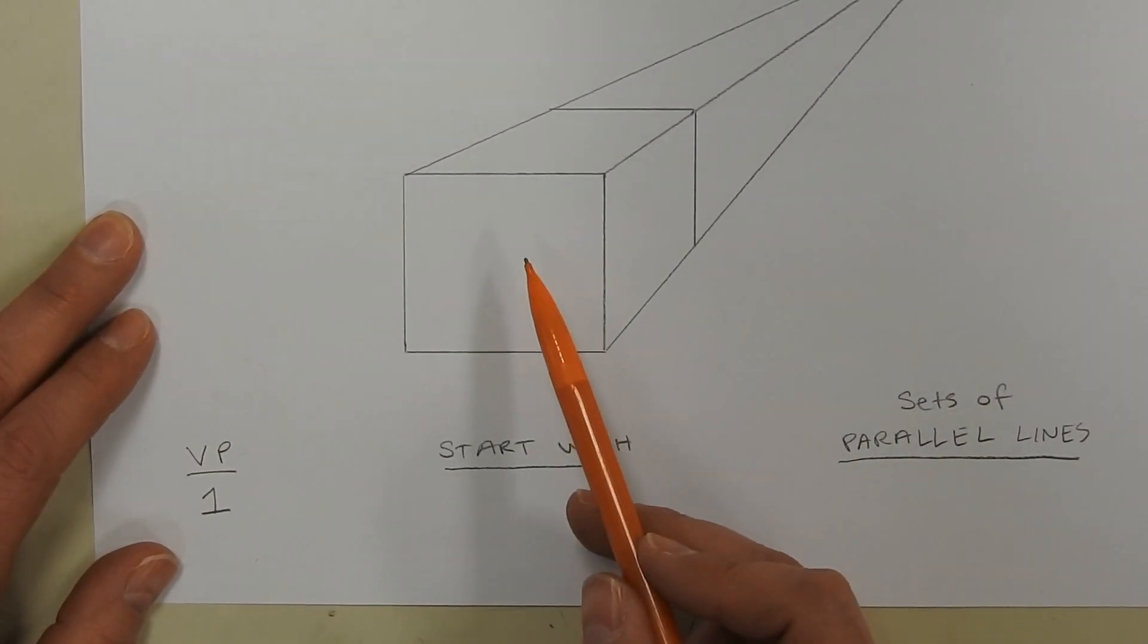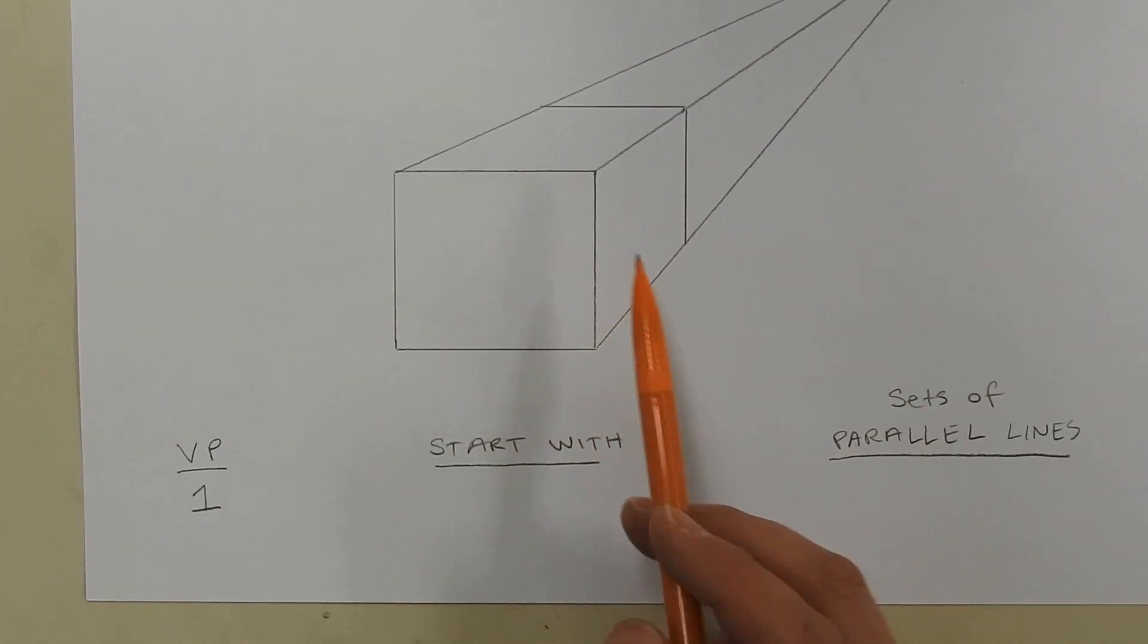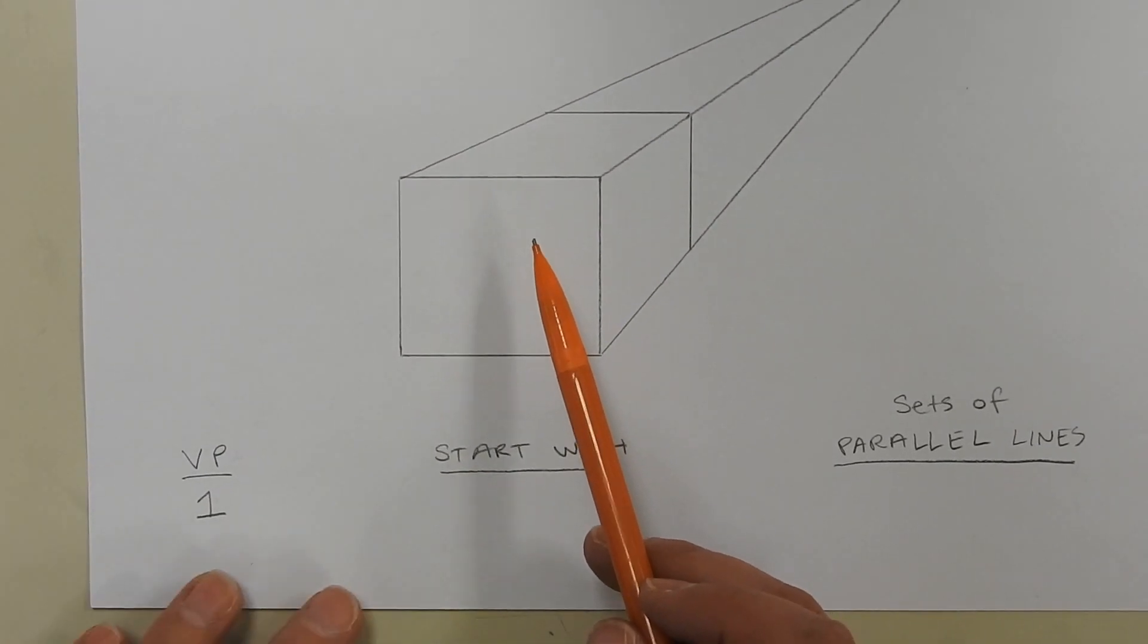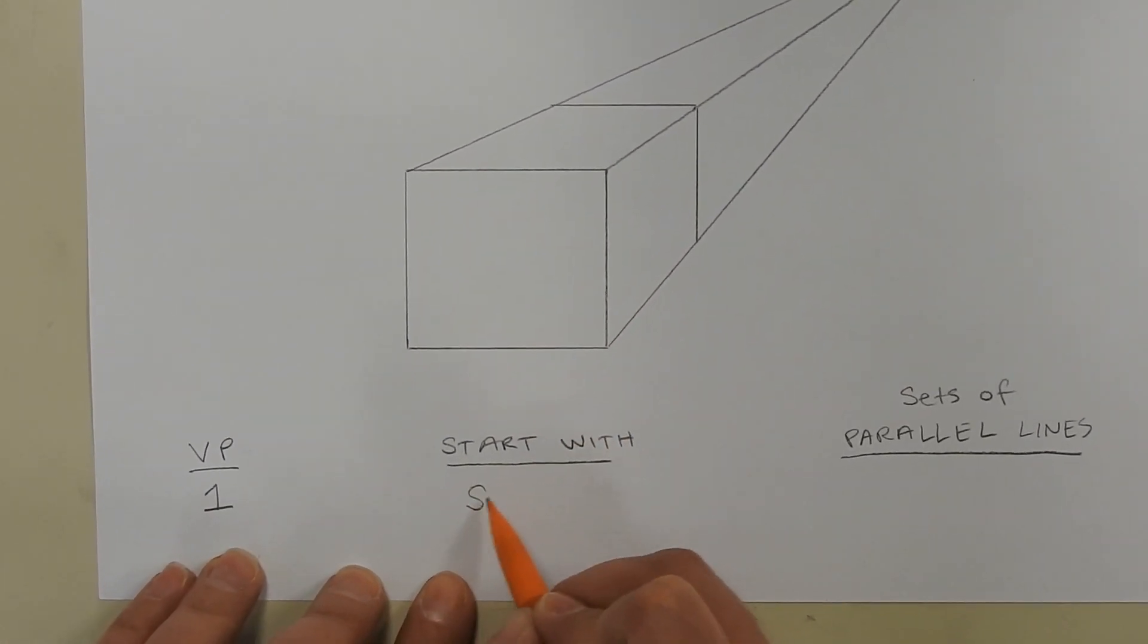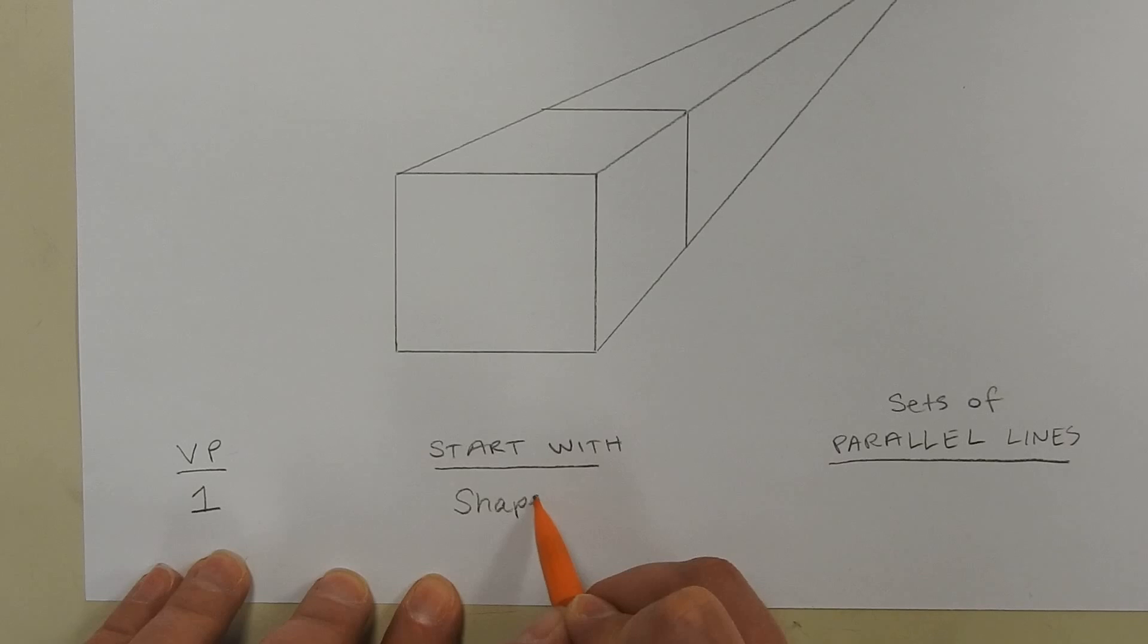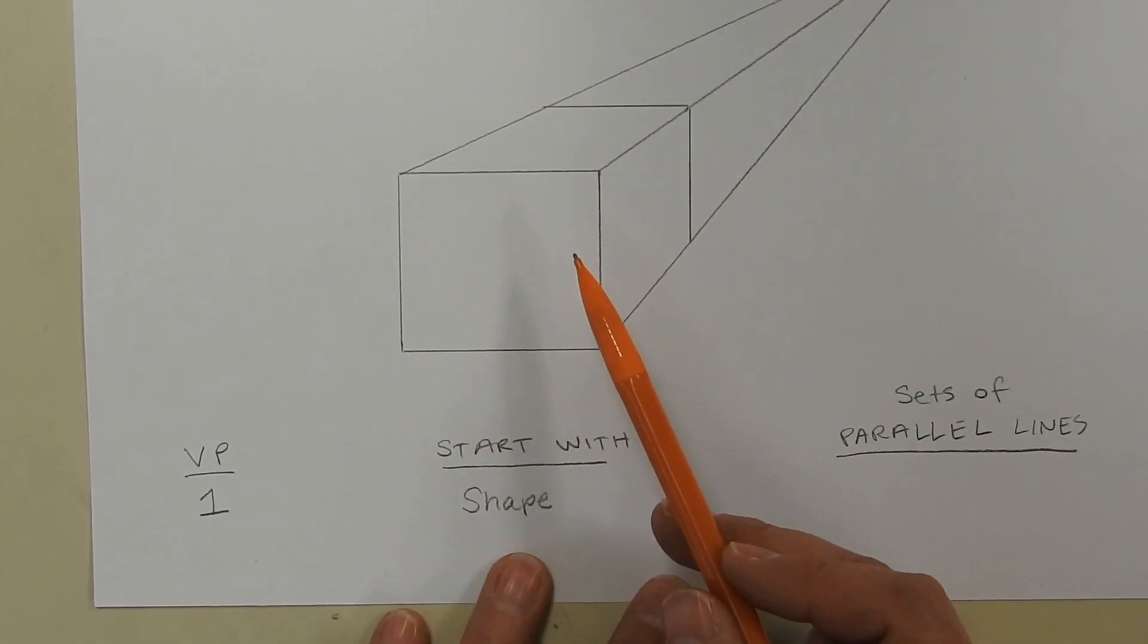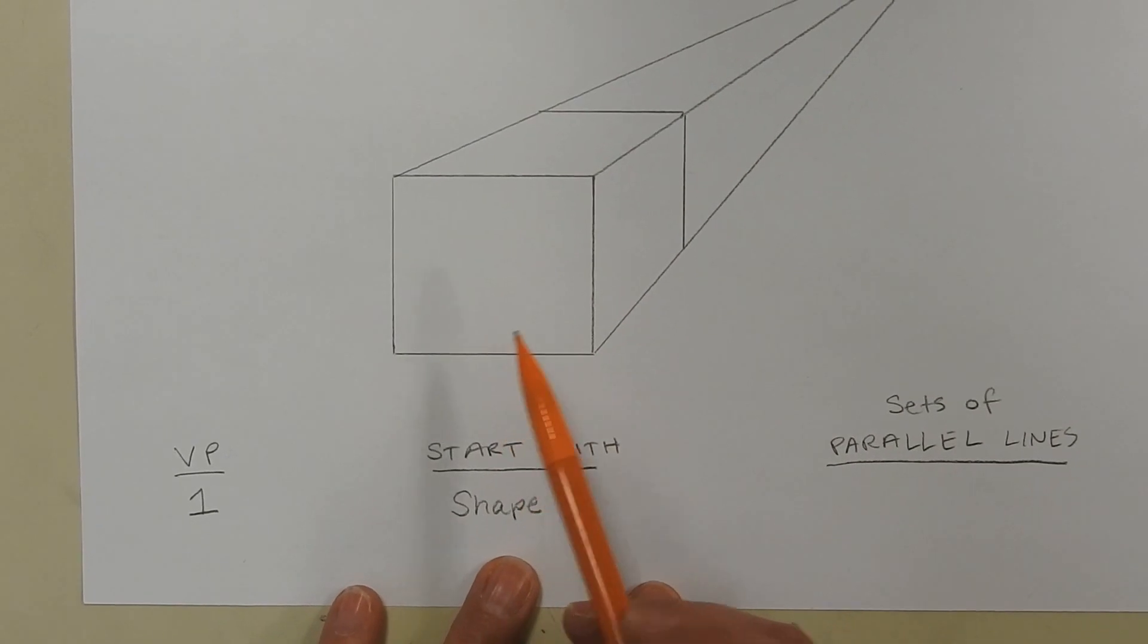When you start, you're looking at the face of the cube, like this. So you're starting with the shape. When you complete your cube, you can see there are sets of parallel lines.